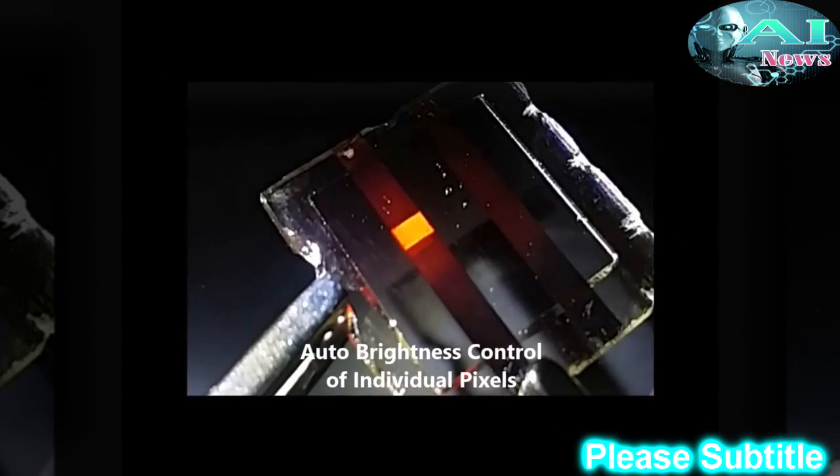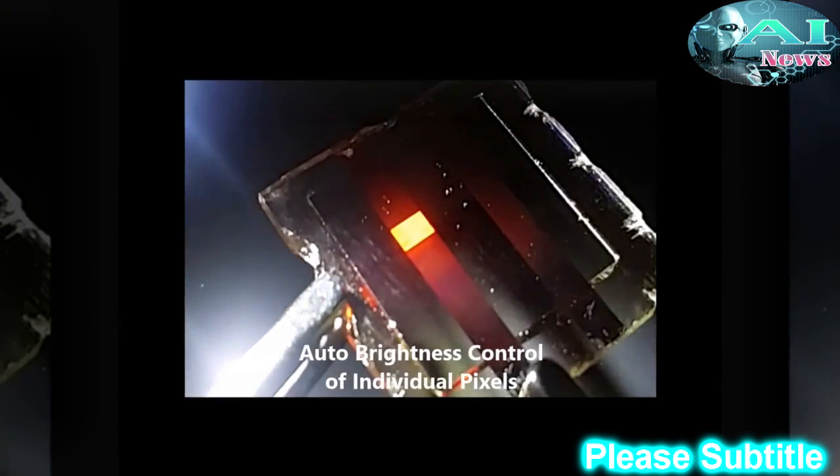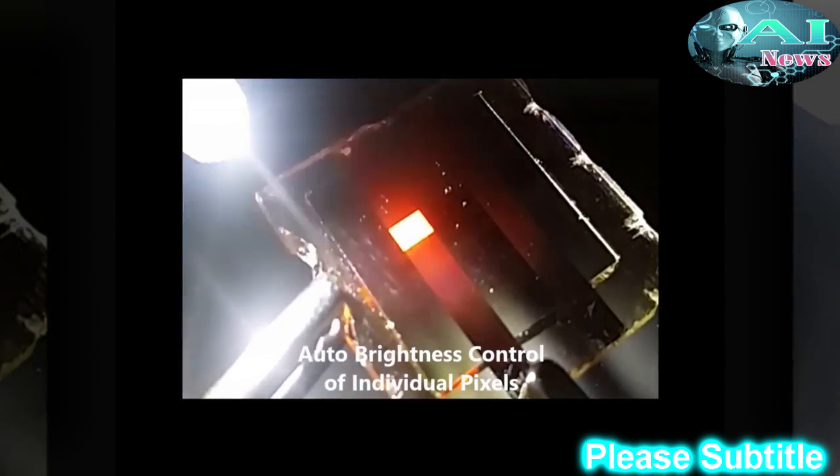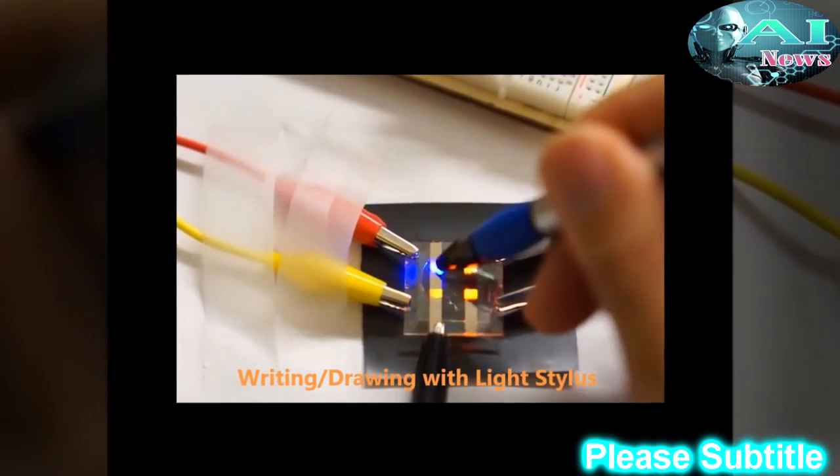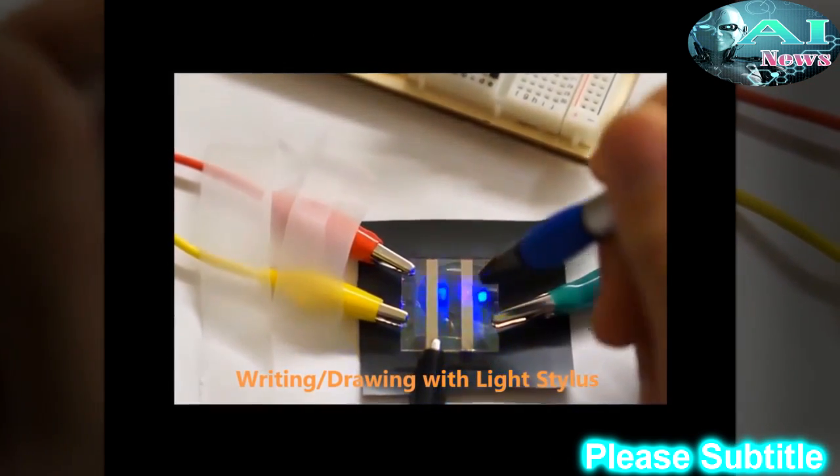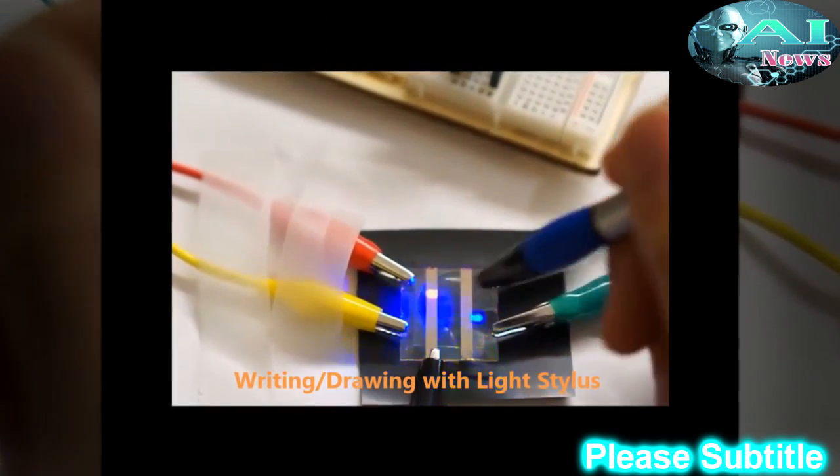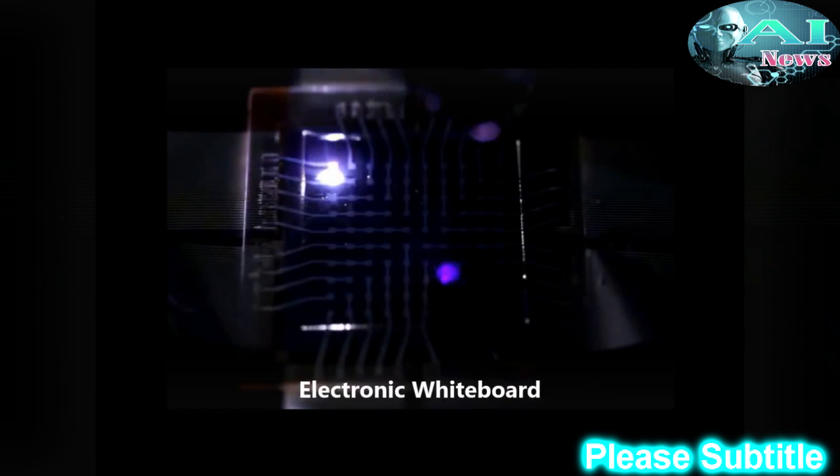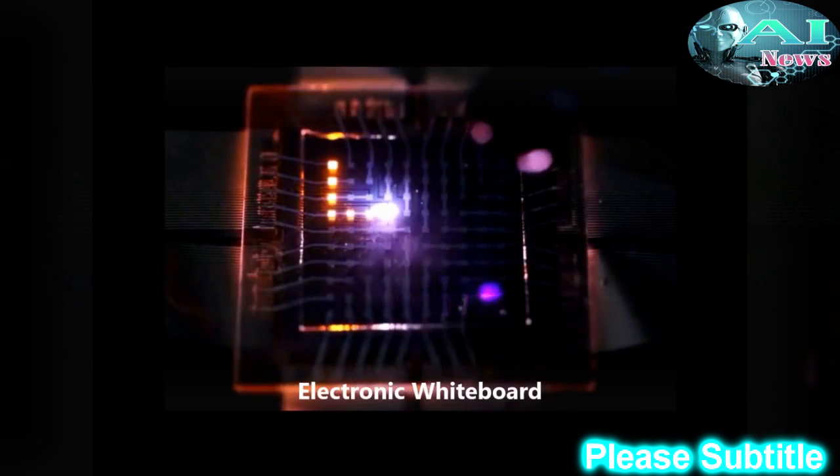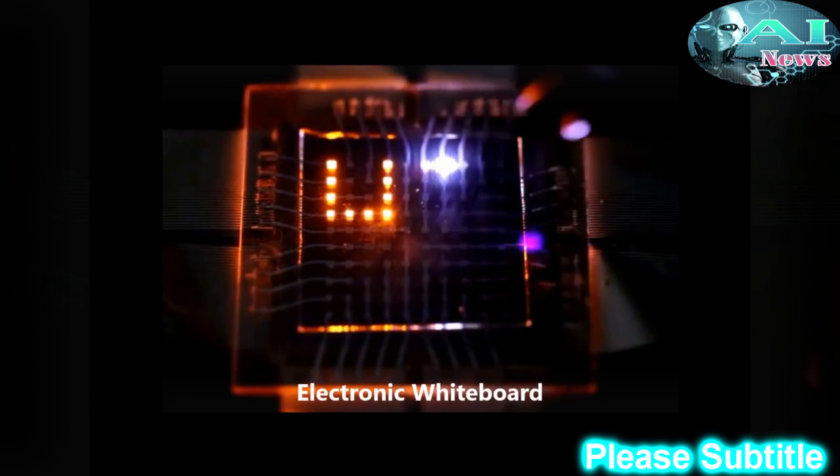Cell phones and other devices could soon be controlled with touchless gestures and charge themselves using ambient light, thanks to new LED arrays that can both emit and detect light.